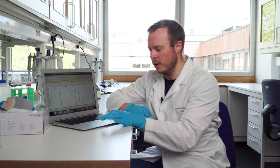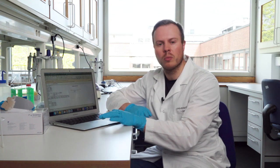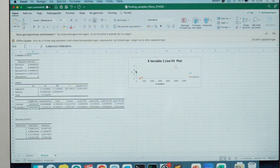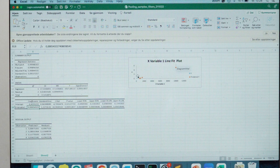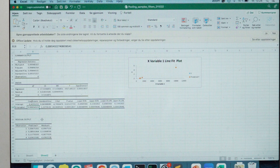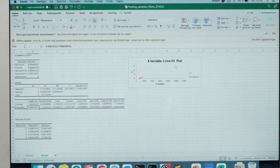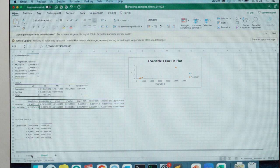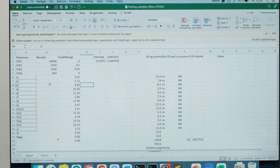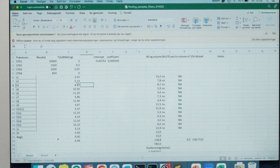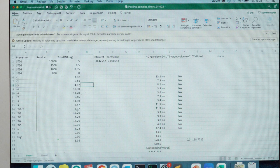So here I have on sheet number two made a small linear regression with the points, and I have gotten out two coefficients. I use these coefficients that are here in the first sheet to calculate the amount of DNA based on the fluorescence.